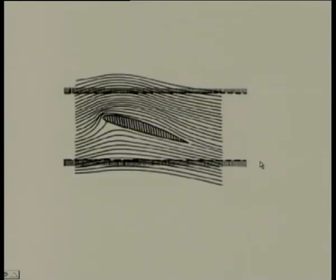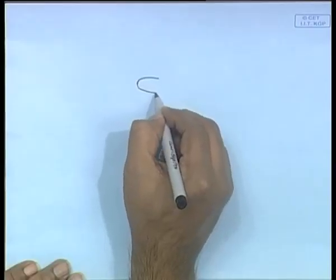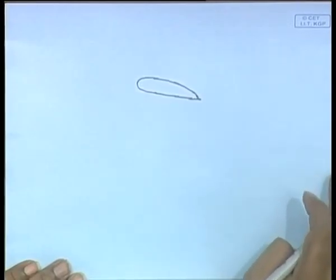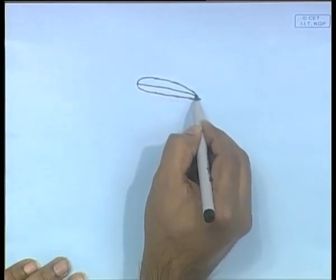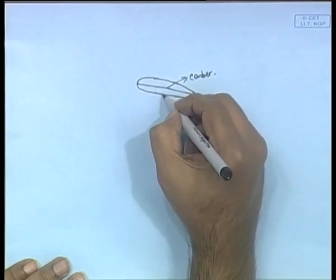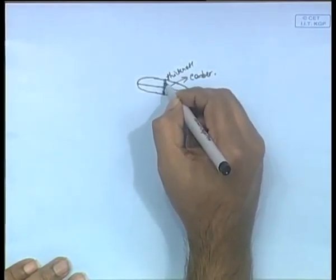How does a hydrofoil work? The shape of a hydrofoil has a camber — the midpoint line — and a thickness. The angle at which the water enters is known as the angle of attack, which is the angle between the hydrofoil and the direction at which water hits it. These are parameters upon which the lift produced depends.